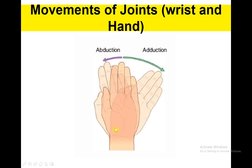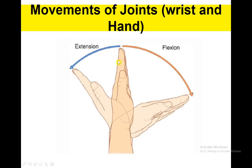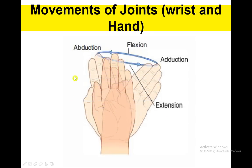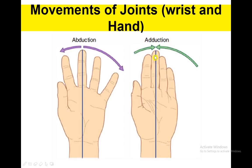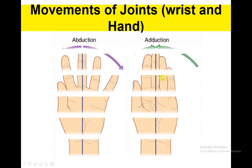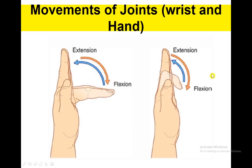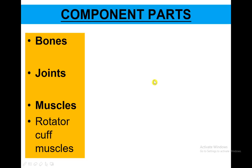Let's talk about the movement at the wrist and the hand. We have abduction and adduction at the wrist, and also flexion and extension. Flexion and extension for the fingers as well. Component parts: the upper limb is formed by the bones, joints, and muscles.